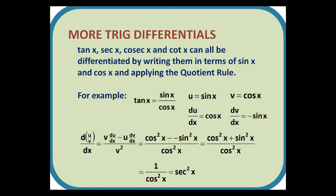More trig differentials. Tan x, sec x, cosec x and cot x can all be differentiated by writing them in terms of sin x and cos x and applying the quotient rule. For example, tan x. Write tan x as sin x over cos x. Substituting in the formula, we have cos squared x minus minus sin squared x, which is the same as sin squared x plus cos squared x, which is of course 1. So we actually have 1 over cos squared x, which is sec squared x.